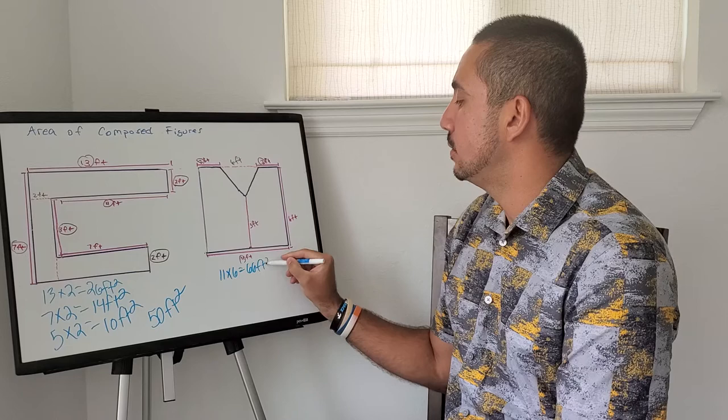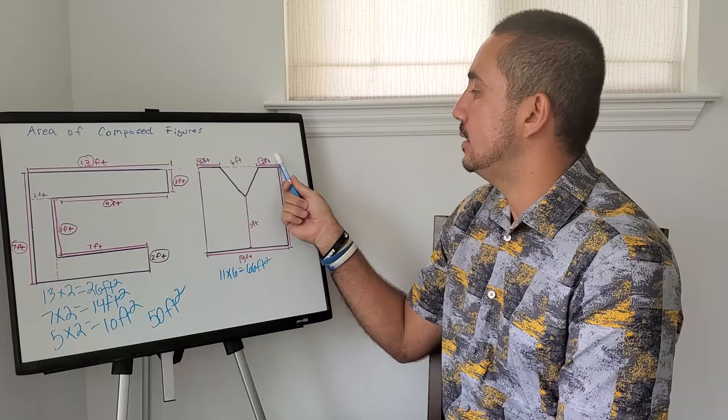Now for the triangle. If this is 11, this is 2, this is 3. 11 minus 2 minus 3, that's 6.